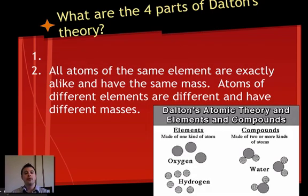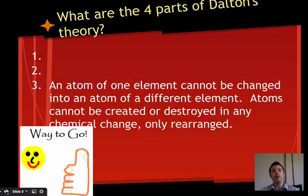Dalton's second theory was that all atoms of the same element are exactly alike and have the same mass. Atoms of different elements are different and have different masses. This is partially true. What Dalton learned is that if you have a whole bunch of atoms of gold, they're all gold, but they're not all exactly alike. What he did find out is that atom of gold is very different than that atom of hydrogen, for example. So atoms of different elements are different and do have different masses.